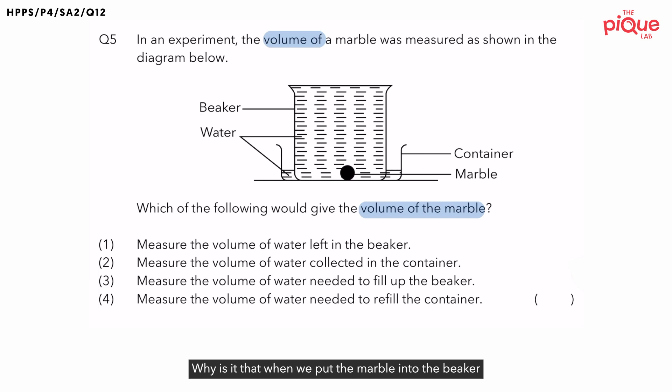Why is it that when we put the marble into the beaker of water, the water will overflow? Marble is a matter. Now what are the two properties of matter? The first property of matter is that matter has mass. And the second property is that matter occupies space. So is it because the marble has mass that's why the water will overflow? Or is it because the marble occupies space in the beaker?